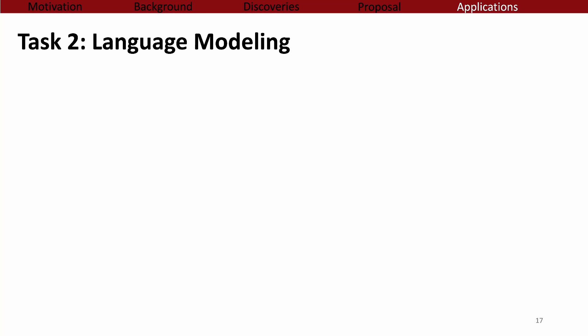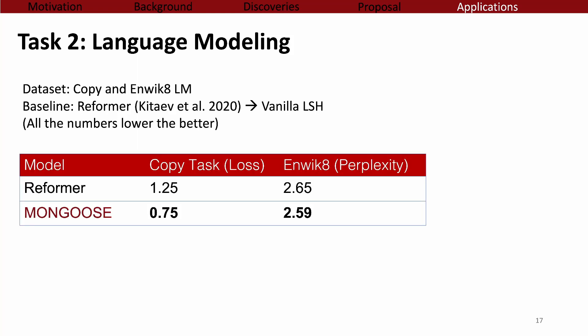The other task is language modeling using a transformer model. The baseline is Reformer, which uses vanilla LSH to approximate attention layers. On both the copy task and enwiki8 dataset, Mongoose achieves lower loss and lower complexity using approximately the same resources.